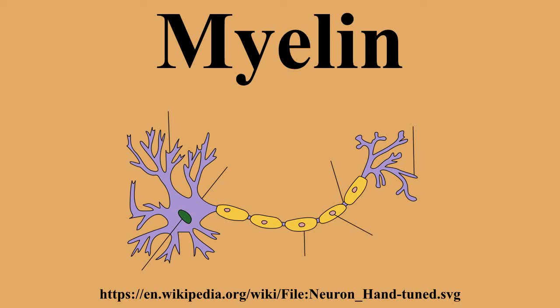Myelin was discovered in 1854 by Rudolf Virchow. Myelin is made by different cell types and varies in chemical composition and configuration, but performs the same insulating function. Myelinated axons are white in appearance, hence the white matter of the brain.